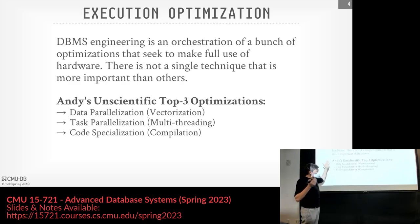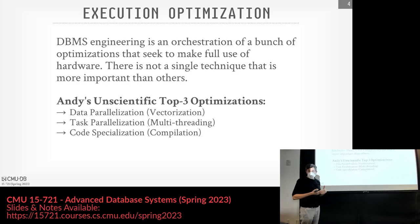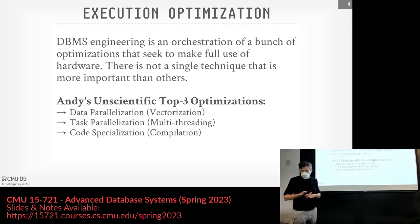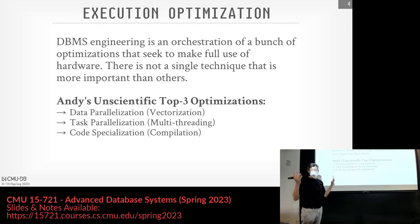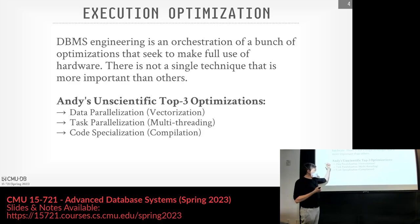My list here of the top three optimizations we're going to go through that matter the most — this is not scientific, just my personal opinion from reading the papers and seeing what other systems do. But the three optimizations that are going to matter the most for us this semester are going to be vectorization, parallelism with multithreading or multicore, and then code specialization or query compilation.